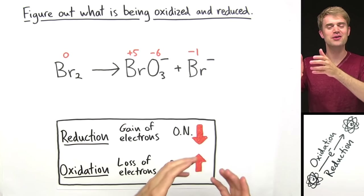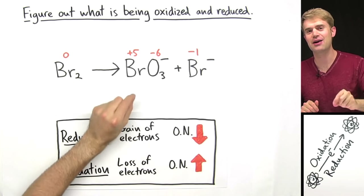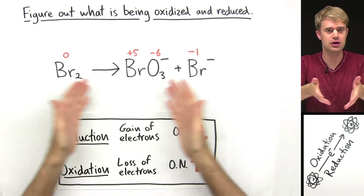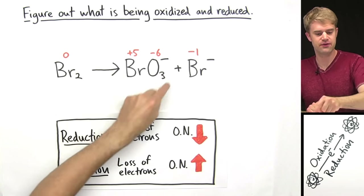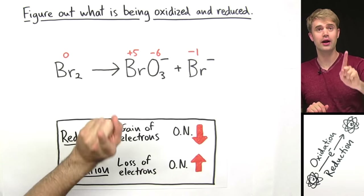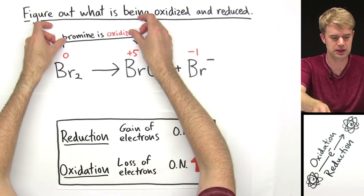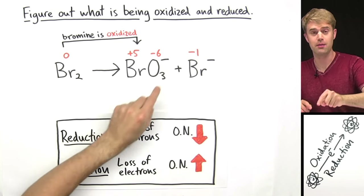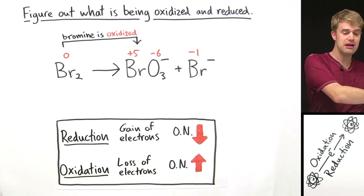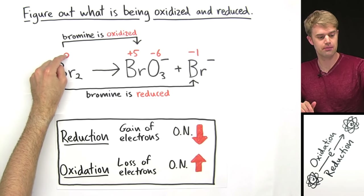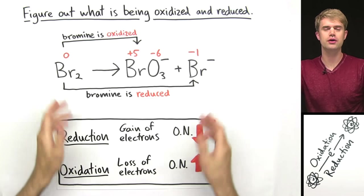So what's being oxidized and what's being reduced? Well, Br₂ bromine is our only choice, so it's got to be both oxidized and reduced. Br₂ is zero here, and then it becomes Br at plus five in this compound — its oxidation number is going up, which means it is undergoing oxidation. Bromine is oxidized when it becomes BrO₃⁻. But bromine also turns into Br⁻, a negative ion, and in this case it is reduced because its oxidation number goes from zero down to negative one. When oxidation number decreases, that's reduction.